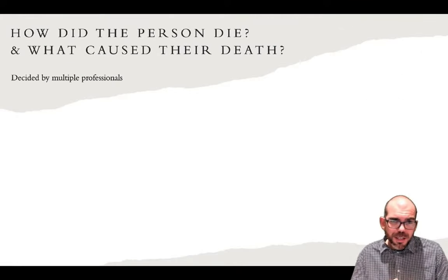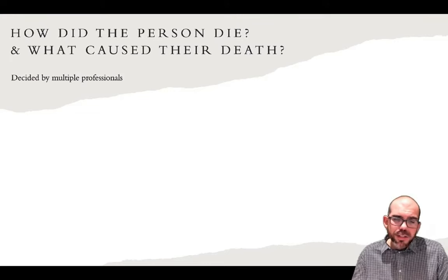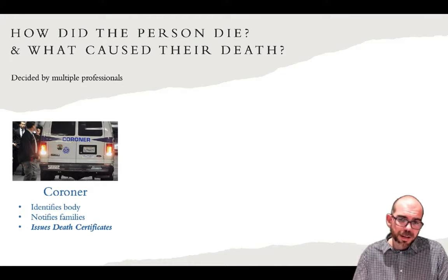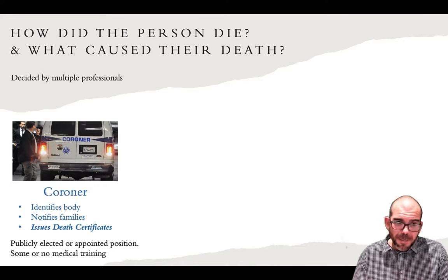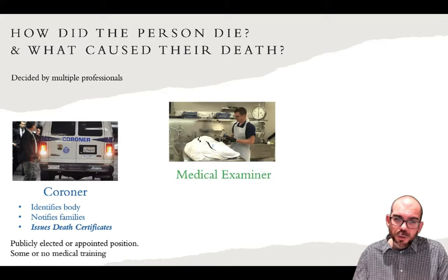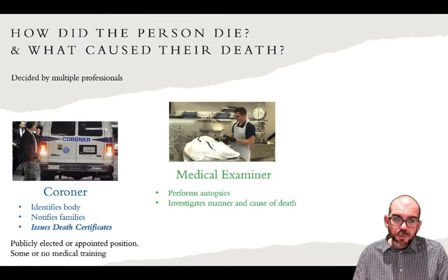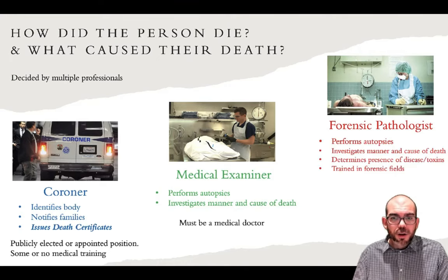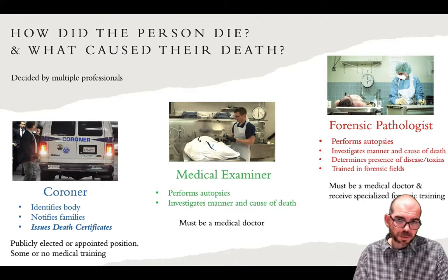For forensics, we want to know how the person died and what caused their death. This is decided by multiple professionals. The coroner identifies the body, notifies families, and issues a legal death certificate. To become a coroner, you just need to be publicly elected or appointed — it is largely a political position. The medical examiner performs autopsies and investigates manner and cause of death, and must be a certified medical doctor. Forensic pathologists also perform autopsies, investigate manner and cause of death, can determine the presence of disease and toxins, and must be a medical doctor with specialized forensic training.